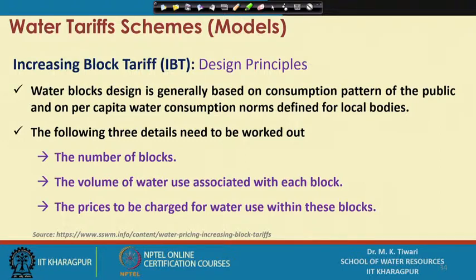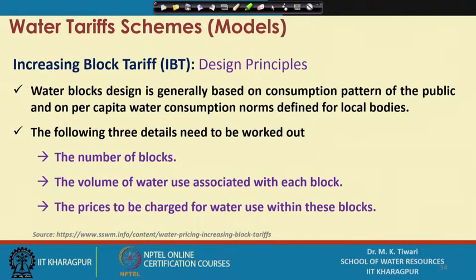You need to decide how many blocks will be kept in the pricing structure. Then, what volume of water use is associated with each block — for example, whether the basic block should be kept at 10, 15, or 20 kiloliters per month. Then, what is going to be the unit price of water in each block — the unit price in the first block, second block, and third block. These three components are needed for designing the IBT pricing structure for water.